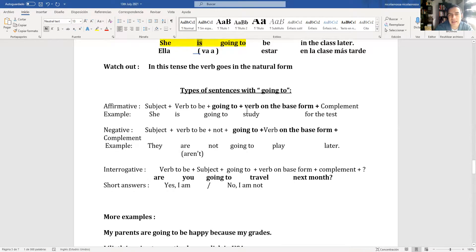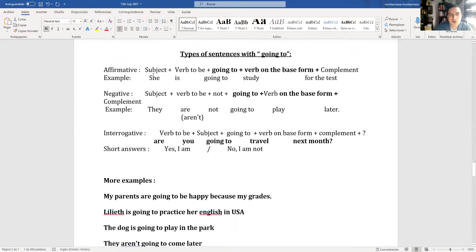Types of sentences with going to. Affirmative: subject, verb to be, going to, verb in base form, complement. She's going to study for the test. Ella va a estudiar para el examen. Negative: subject, verb to be plus not, plus going to, plus verb on the base form plus complement. Example: They are not going to play later. Contraction: They aren't going to play later.